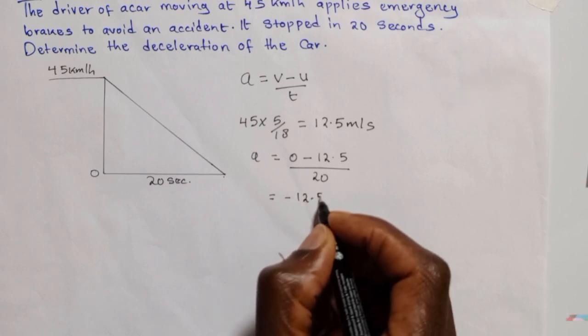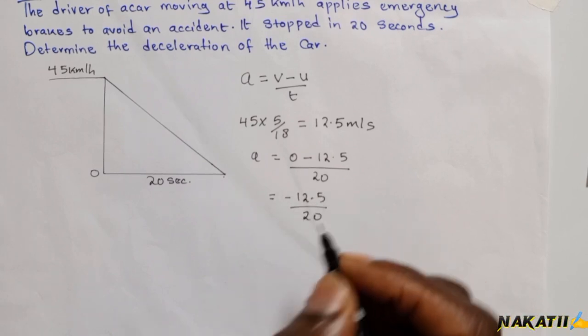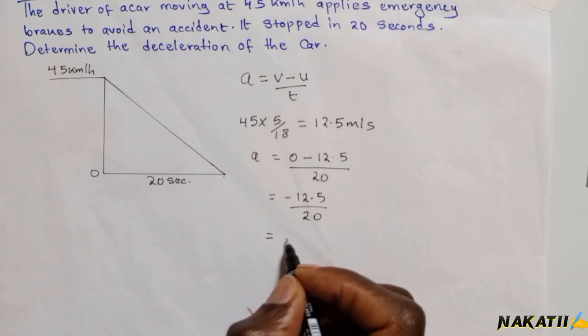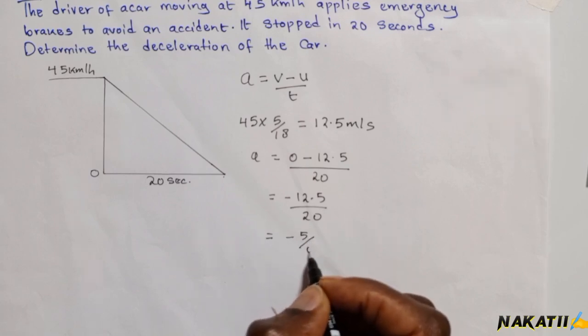This gives us negative 12.5 divided by 20. When you calculate this as a fraction, you get negative 5 over 8.